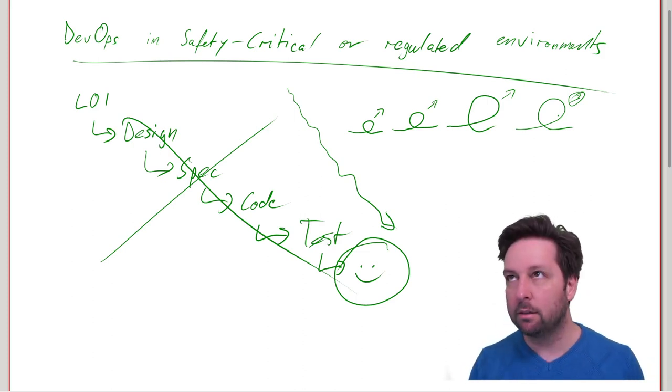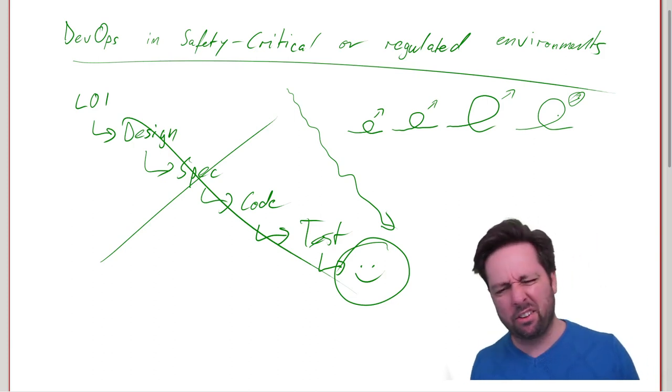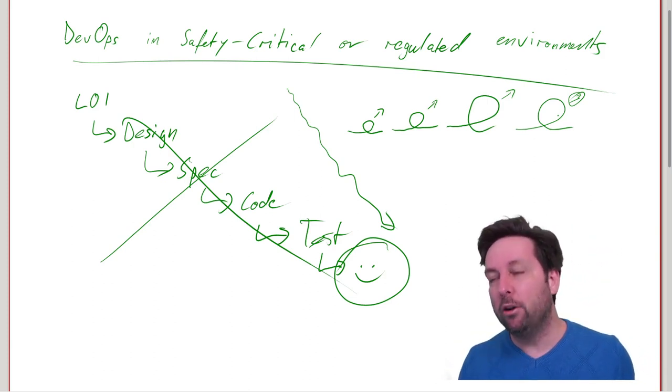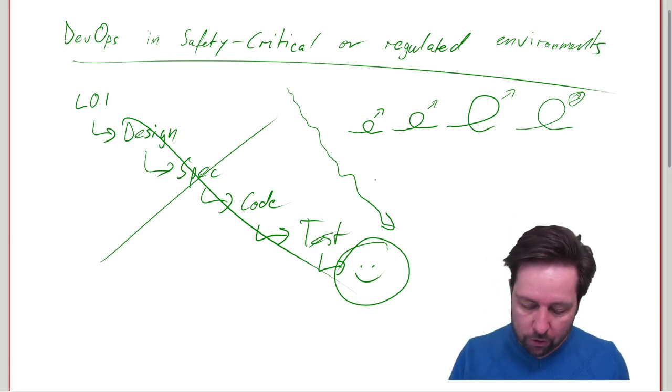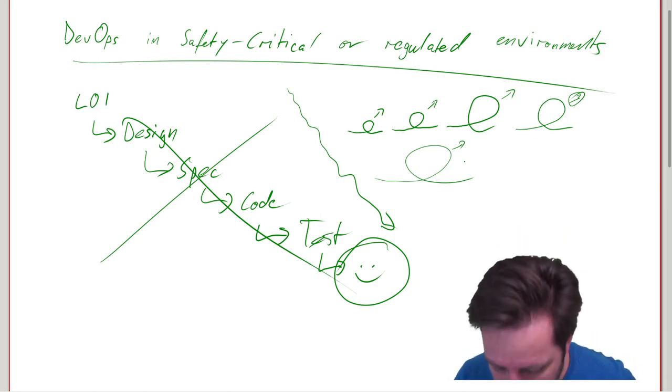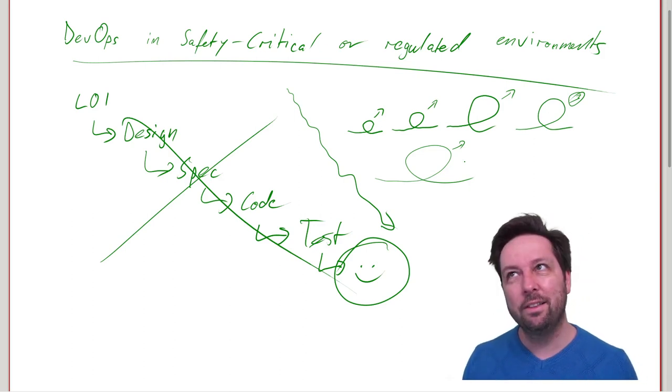But if they aren't, like if they say something's missing, something's not quite the way we like it, well no biggie, right? You just do another iteration, generate another set of documents. Isn't that nice?